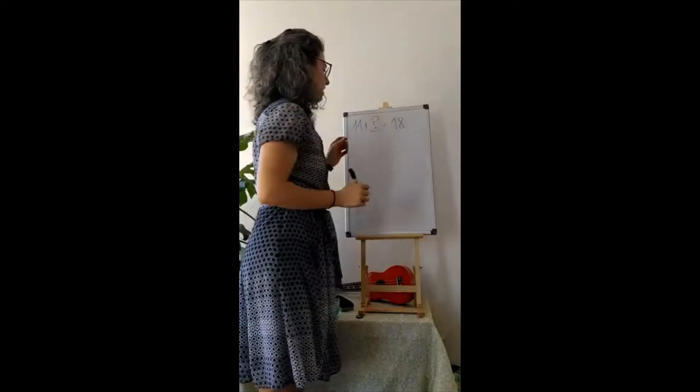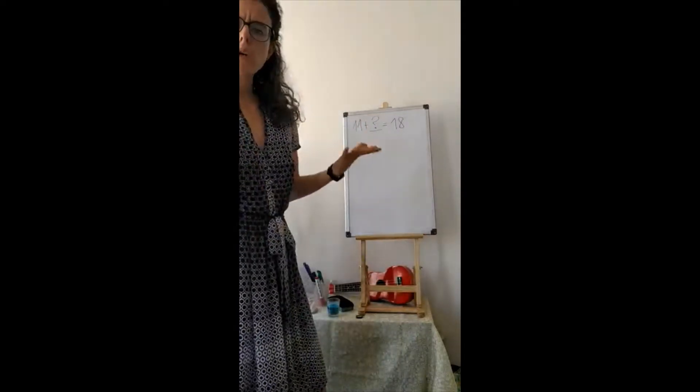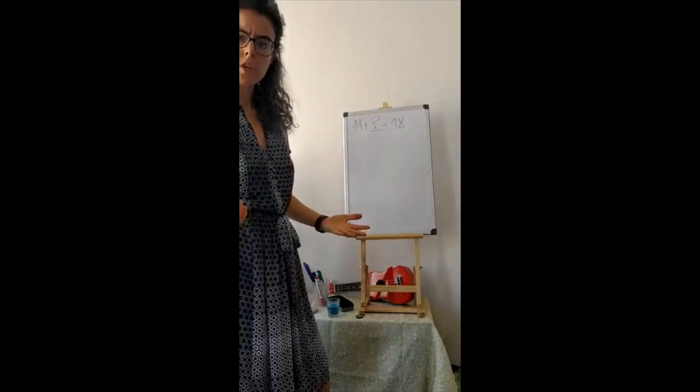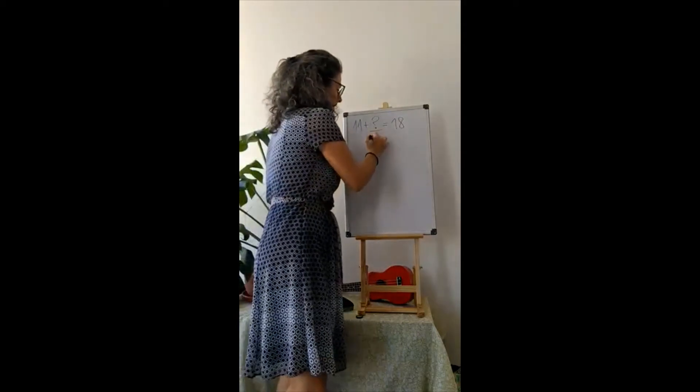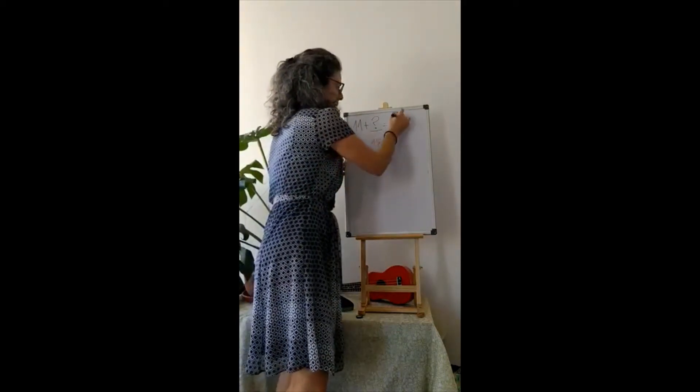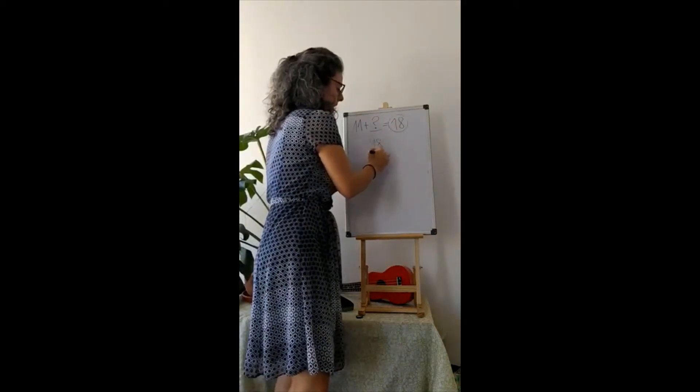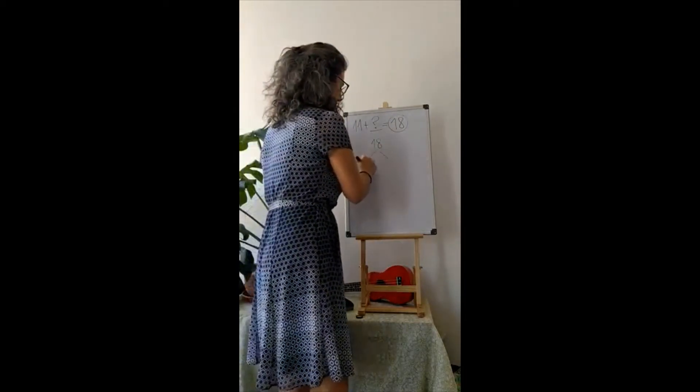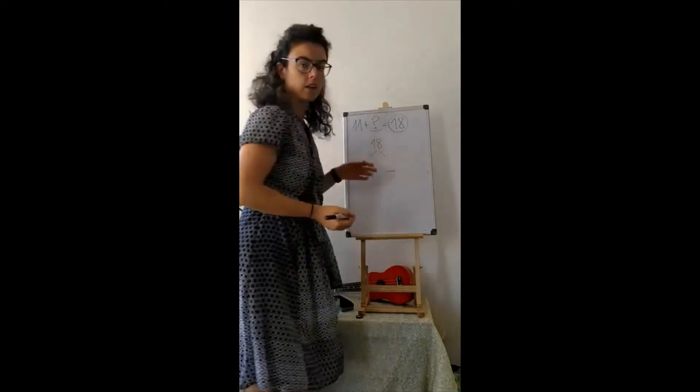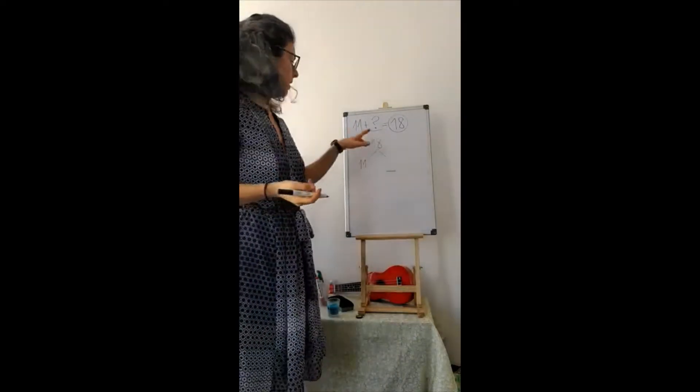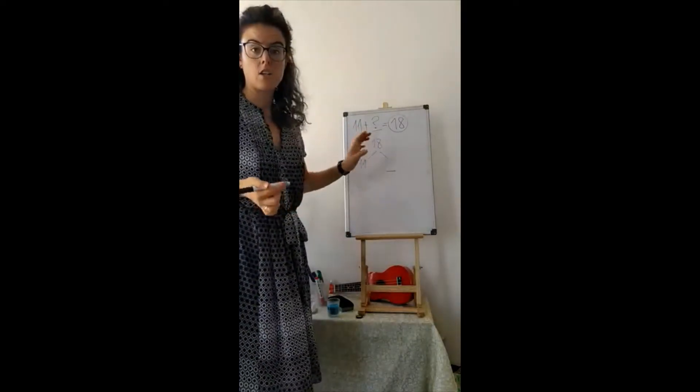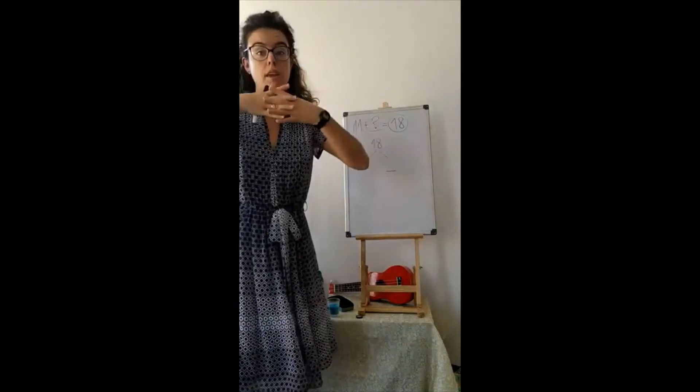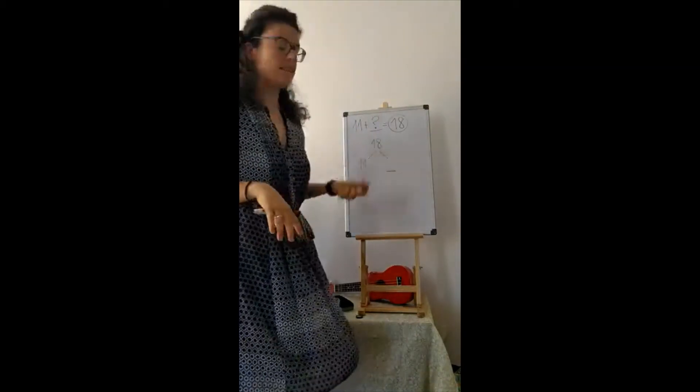So we have a question mark here. What are we going to subtract? Well, we know that eighteen, in this problem, eighteen is made of two different parts. It's made of an eleven and this other part that we are missing. Because there's two addends.